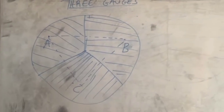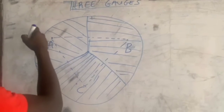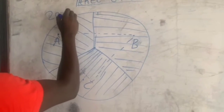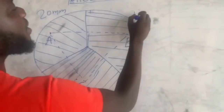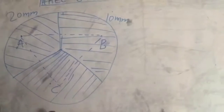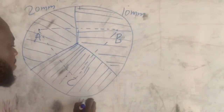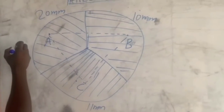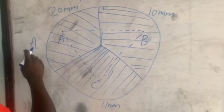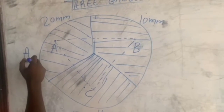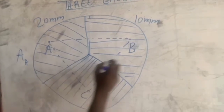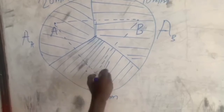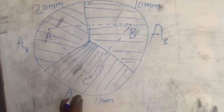In the question, the rainfall amount at gauge A might be 20 millimeters, at gauge B it can be 10 millimeters, and at gauge C it can be 11 millimeters. The area here becomes area A, this area becomes area of region B, and this whole area becomes area of region C.